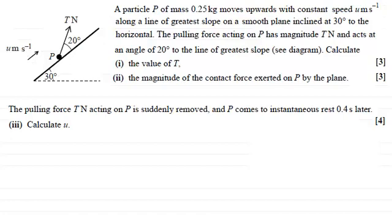Now if the force of T Newtons is removed, let's just remove that now, then the only forces acting on P are going to be its weight, which we'll have acting downwards, which would be 0.25, its mass, times G and that would be measured in Newtons.